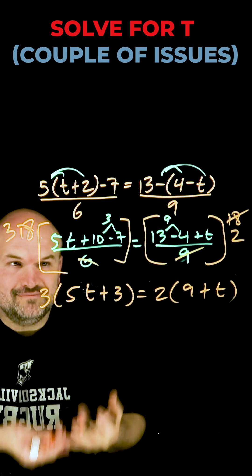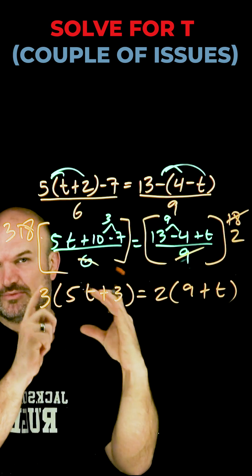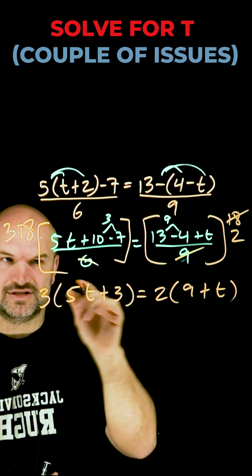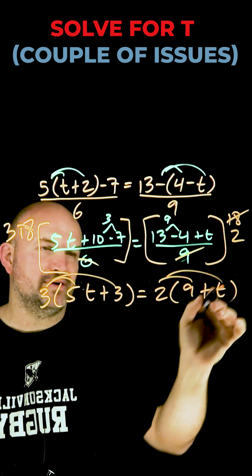Alright, now again, my t is still inside these parentheses, right? Make sure the 3 is being multiplied by both terms. I use parentheses to group them together. But to solve for t, I got to get the t outside of those parentheses. So I need to apply distributive property one more time.